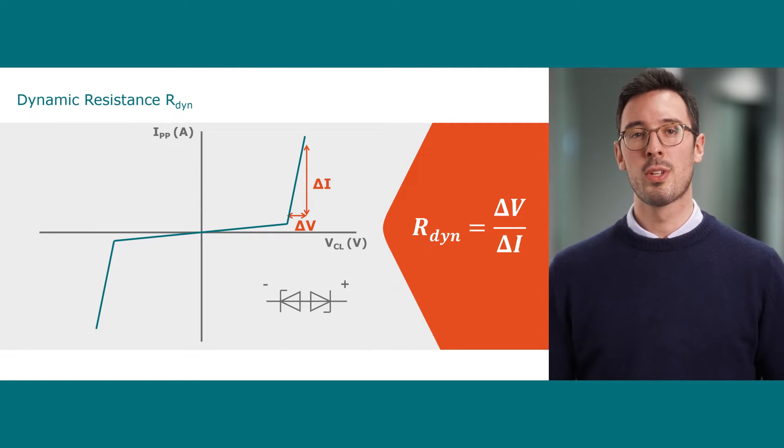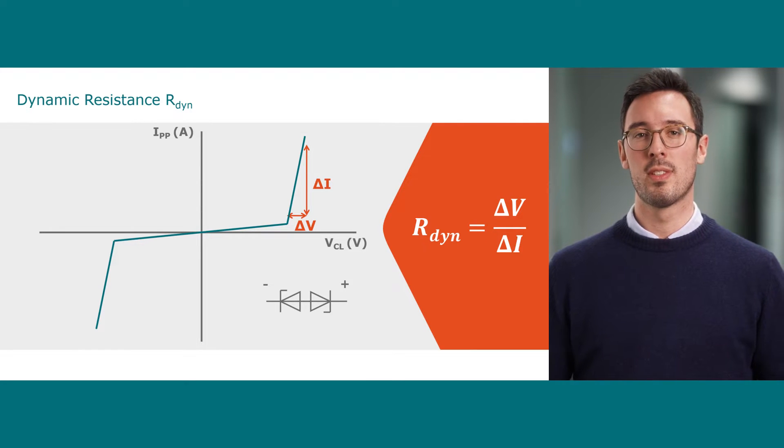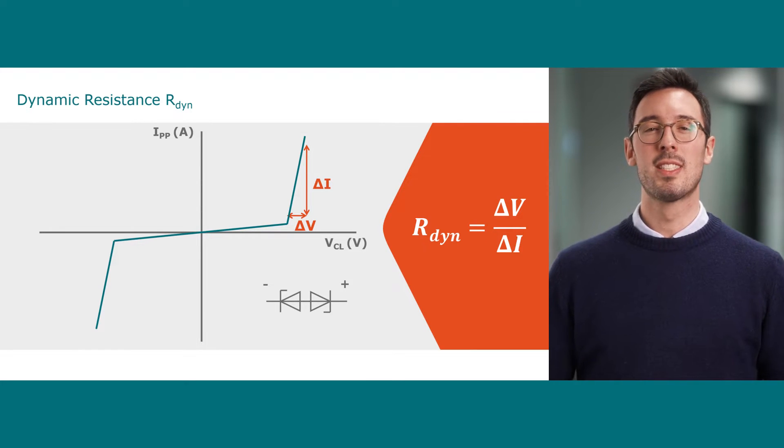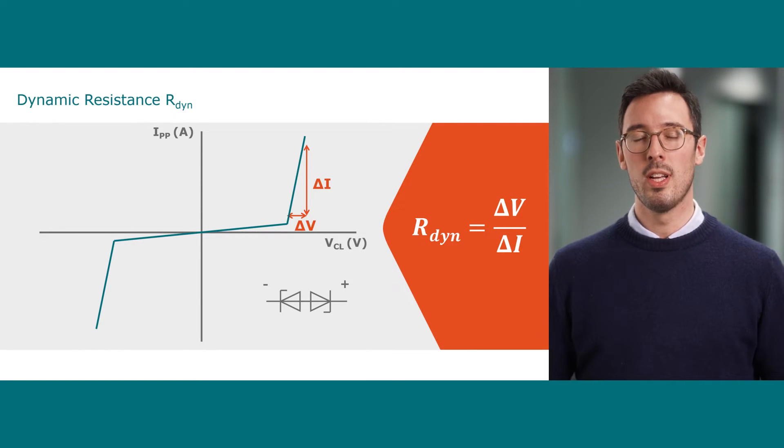Key takeaway: the lower the dynamic resistance, meaning a steep curve, the lower is the clamping voltage. We want the clamping voltage as low as possible to improve the system level robustness.